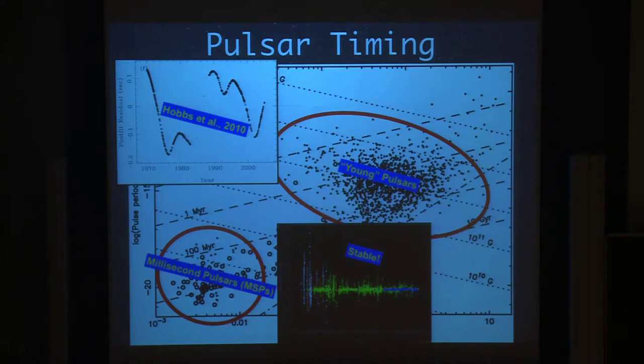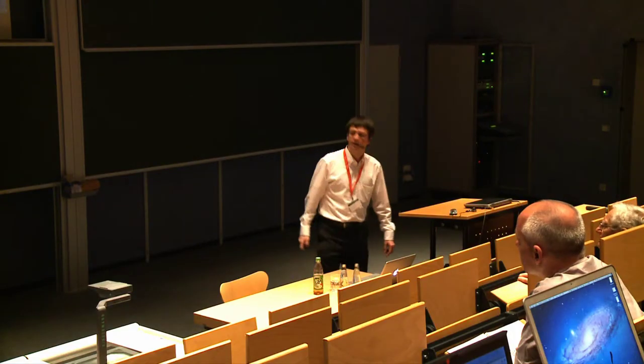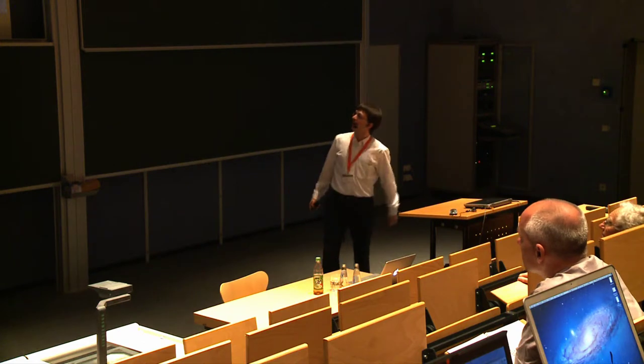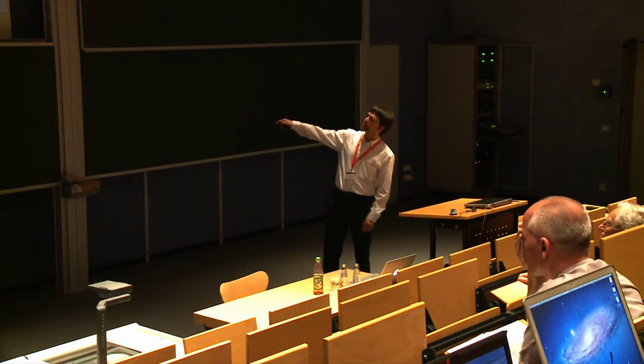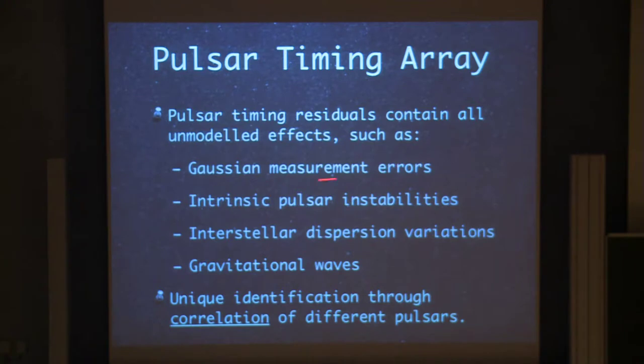I told you that these are the timing residuals. That means everything that happens in nature, but that we did not put in our models, should be in there at some level. And so there's several things that we know should be in there. Of course, measurement errors as mentioned already. The intrinsic pulsar instabilities. As I said, for millisecond pulsars, they're not really seen yet, but they might be at a lower level where we can't see them yet. I mentioned that the interstellar dispersion comes into the formula. Well, if that varies in time, that is something we also see in the residuals and we should correct for it. And of course, finally, gravitational waves are there.